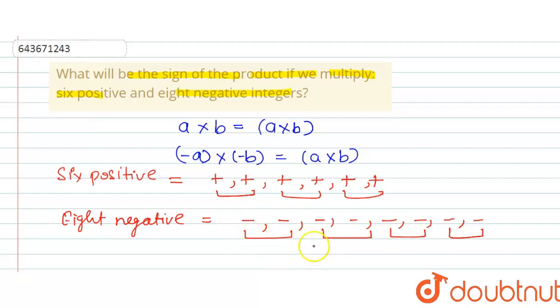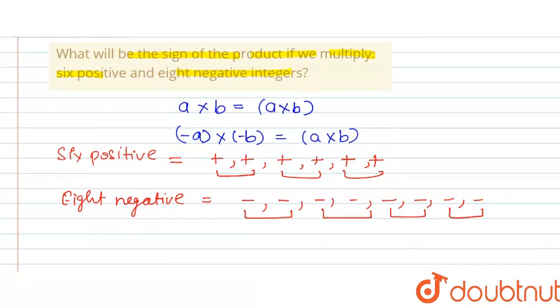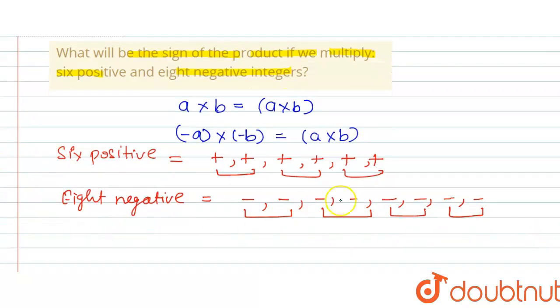be no unpaired sign. If there was an unpaired negative sign, then the result would become negative, but there is no unpaired sign. So here the resultant product will be with positive sign. This is the answer for this question. Thank you.